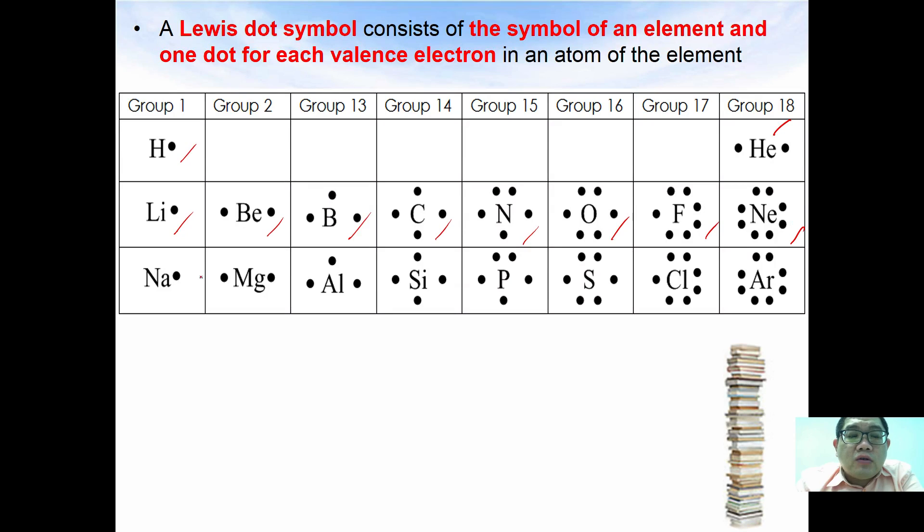Same with sodium, magnesium, aluminum, silicon, phosphorus, sulfur, chlorine and argon. Other than dots you can also use other symbols such as a cross or a circle. These are the representations of electrons for each element inside the periodic table.